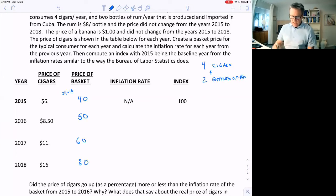I calculate the inflation rate going from 40 to 50 as 25%, and 50 to 60 as 20%, and 60 to 80 as 33.33%.